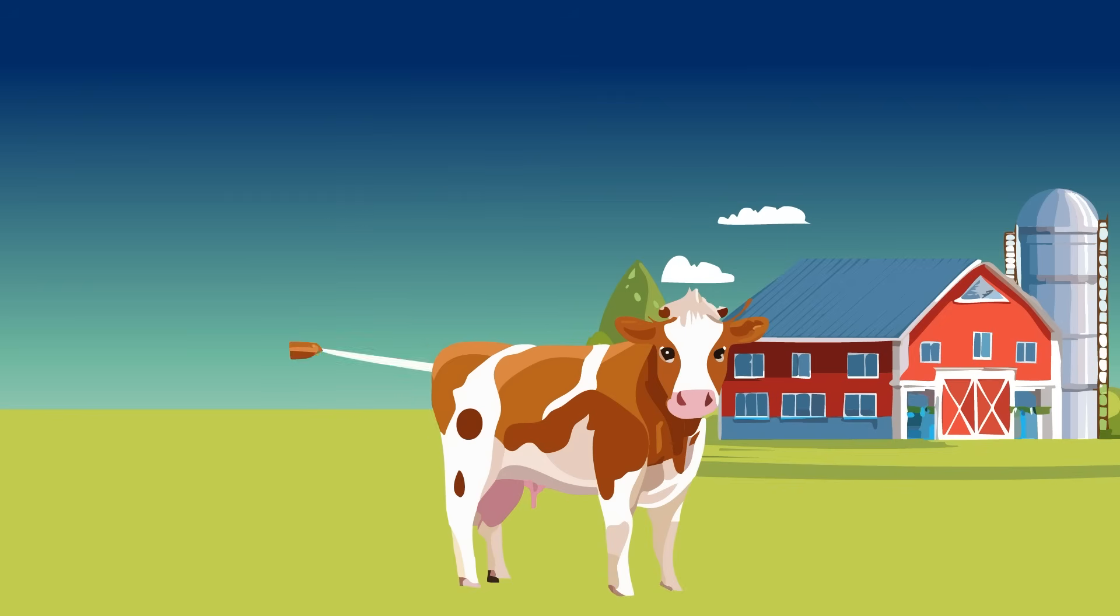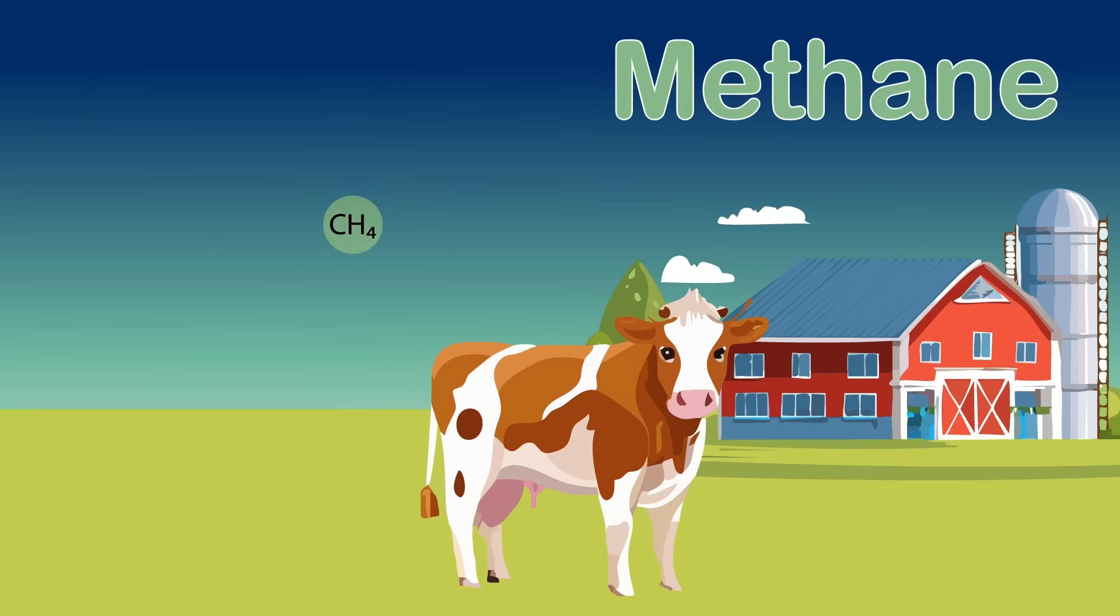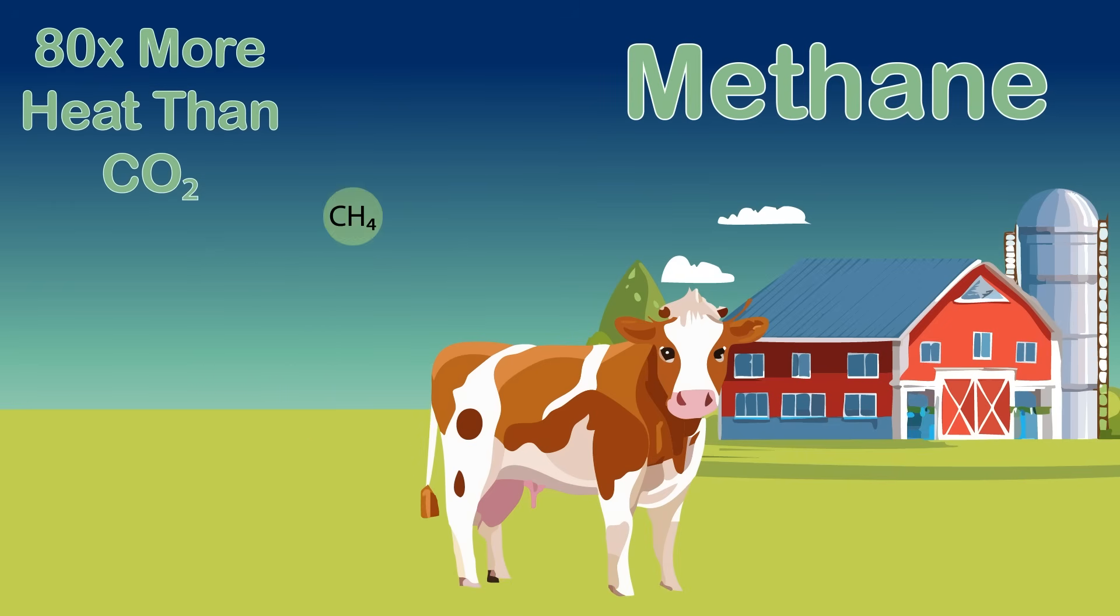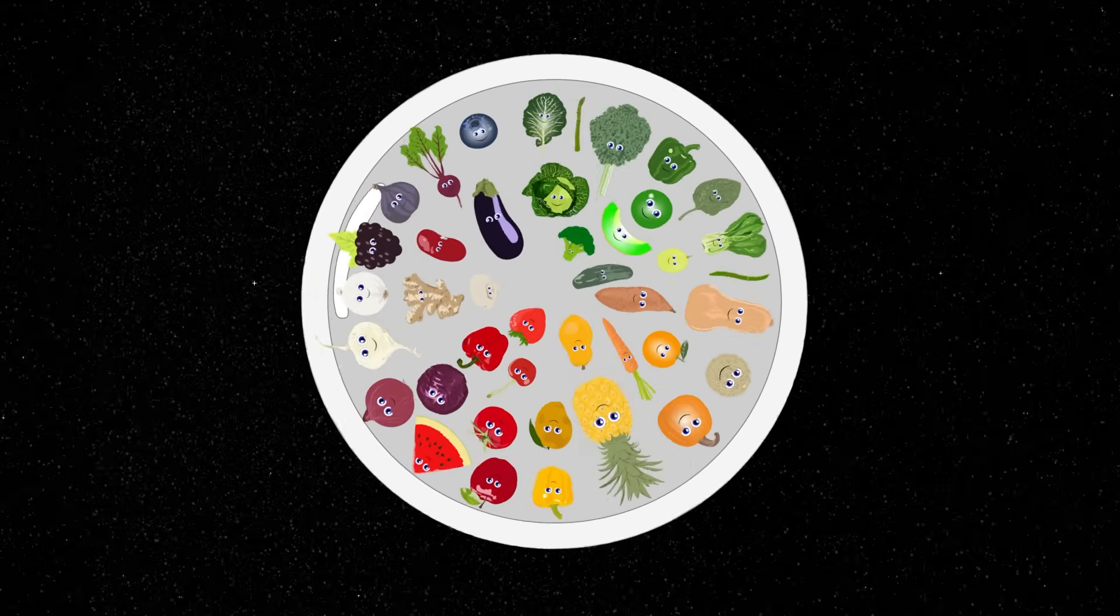Raising cows and growing rice releases methane, a super strong greenhouse gas that makes Earth's temperature insane. Methane traps over 80 times more heat than CO2. Go eat more whole foods like fruits and veggies so Earth can stay cool.